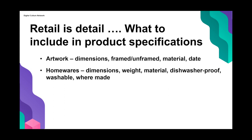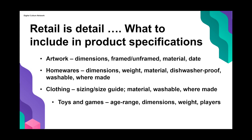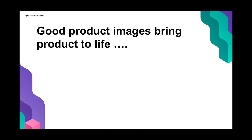For clothing: sizing (consider providing a size guide), material, washability, where it was made. For toys and games: age range, dimensions, weight, and number of players. For food and drink: ingredients, storage instructions, allergens, dimensions and weight. Hopefully a useful reference slide to check whether you're covering all of that in your product specifications.